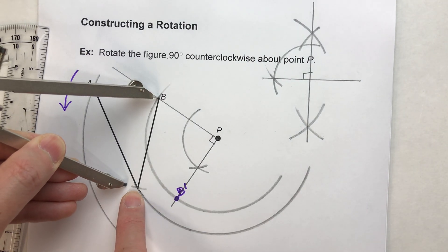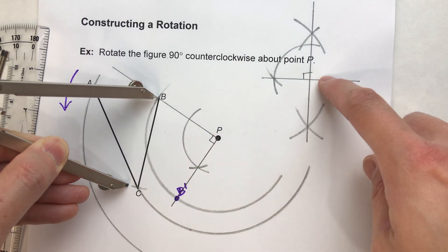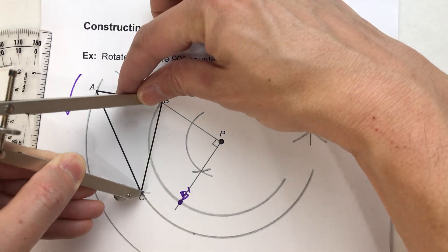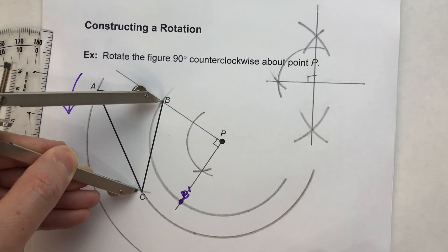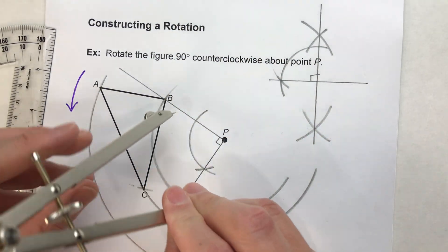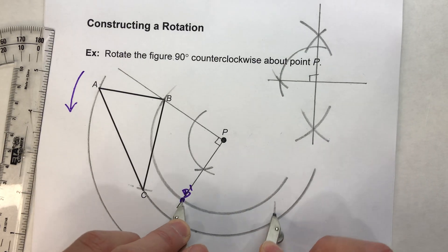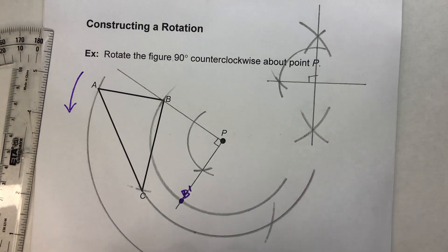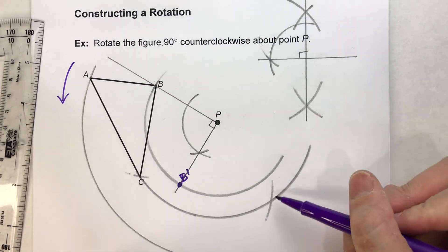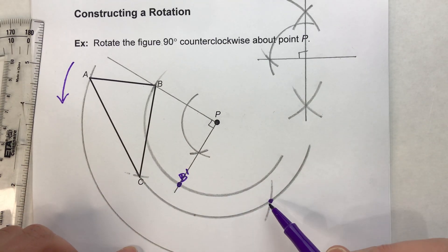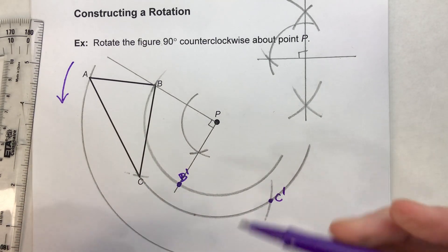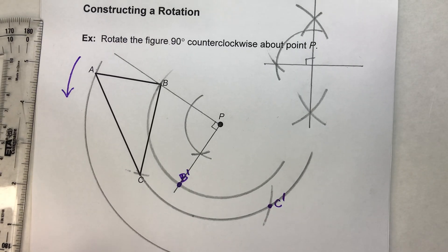So there's a faster way to find C prime other than duplicating that right angle again. What I could do is just take this distance from B to C and then repeat it off of B prime. And notice where that arc intersects the path of C. That's going to be my C prime.